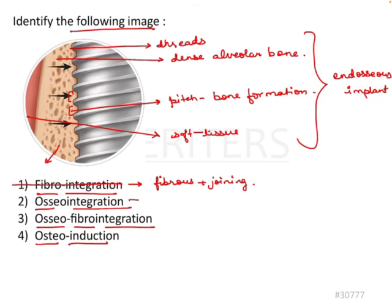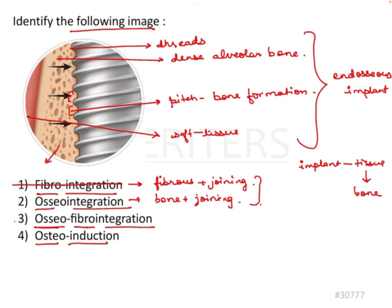Osteointegration means bone joining — that could be a possible option. We will come back to that. The next one is osteofibro integration, meaning a combination of both. But we only see bone at the implant and tissue surface. We cannot see any fibrous tissue over there, so the chances of this option are also not right.